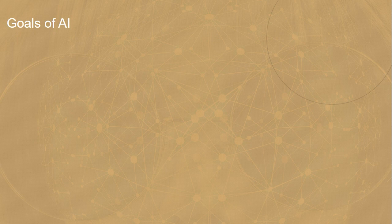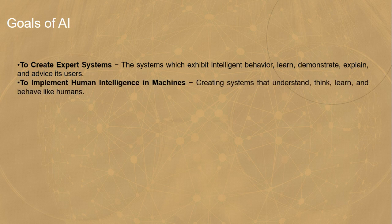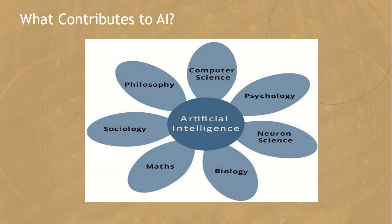What are the goals of artificial intelligence? To create expert systems — systems which exhibit intelligent behavior, which can learn, demonstrate, explain and advise the users. And to implement human intelligence in machines — creating systems that can understand, think, learn and behave like human beings. The fields contributing to artificial intelligence include computer science, psychology, neuron science, biology, mathematics, sociology and philosophy. Almost all the domains of academics are contributing to AI.